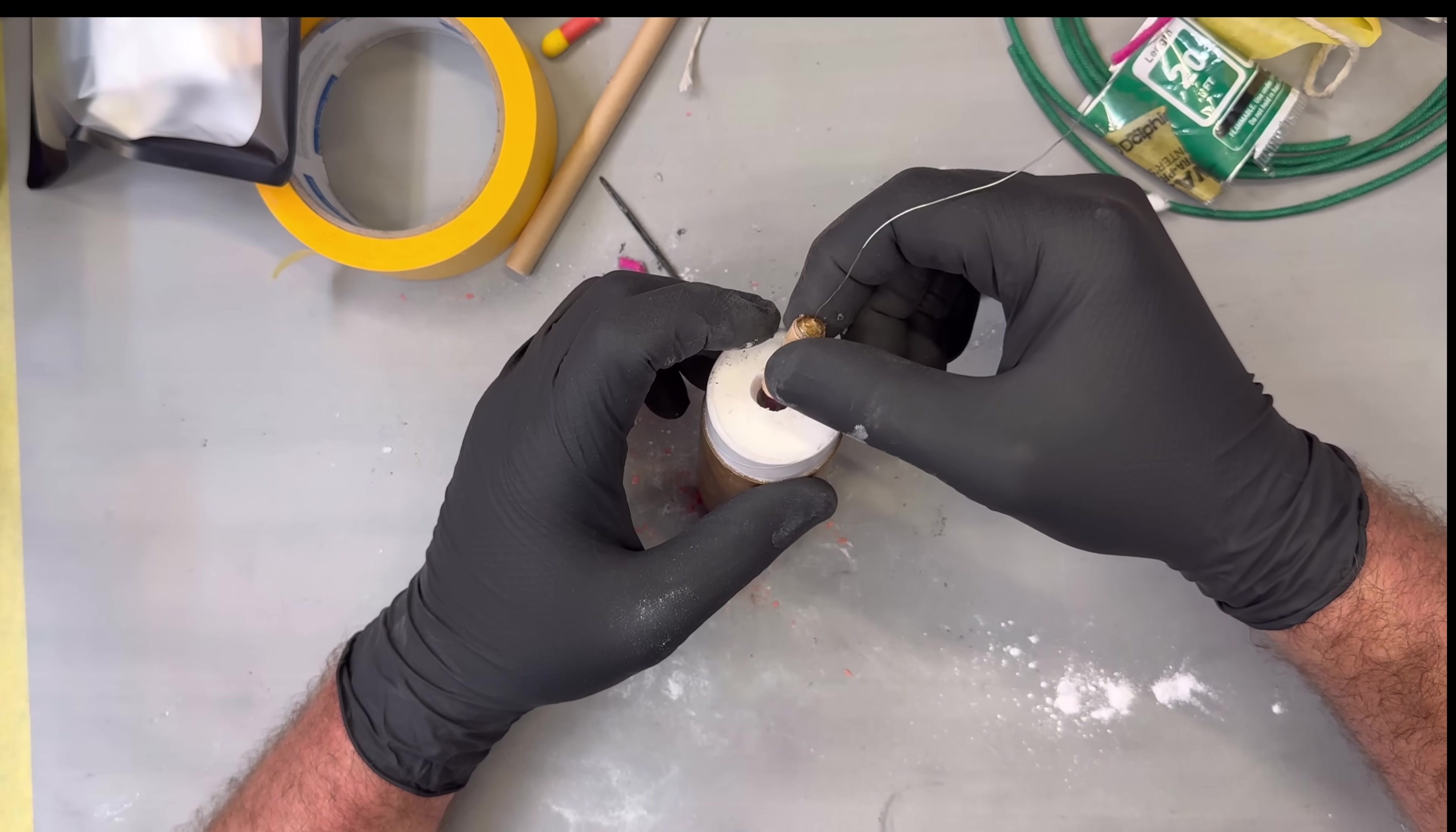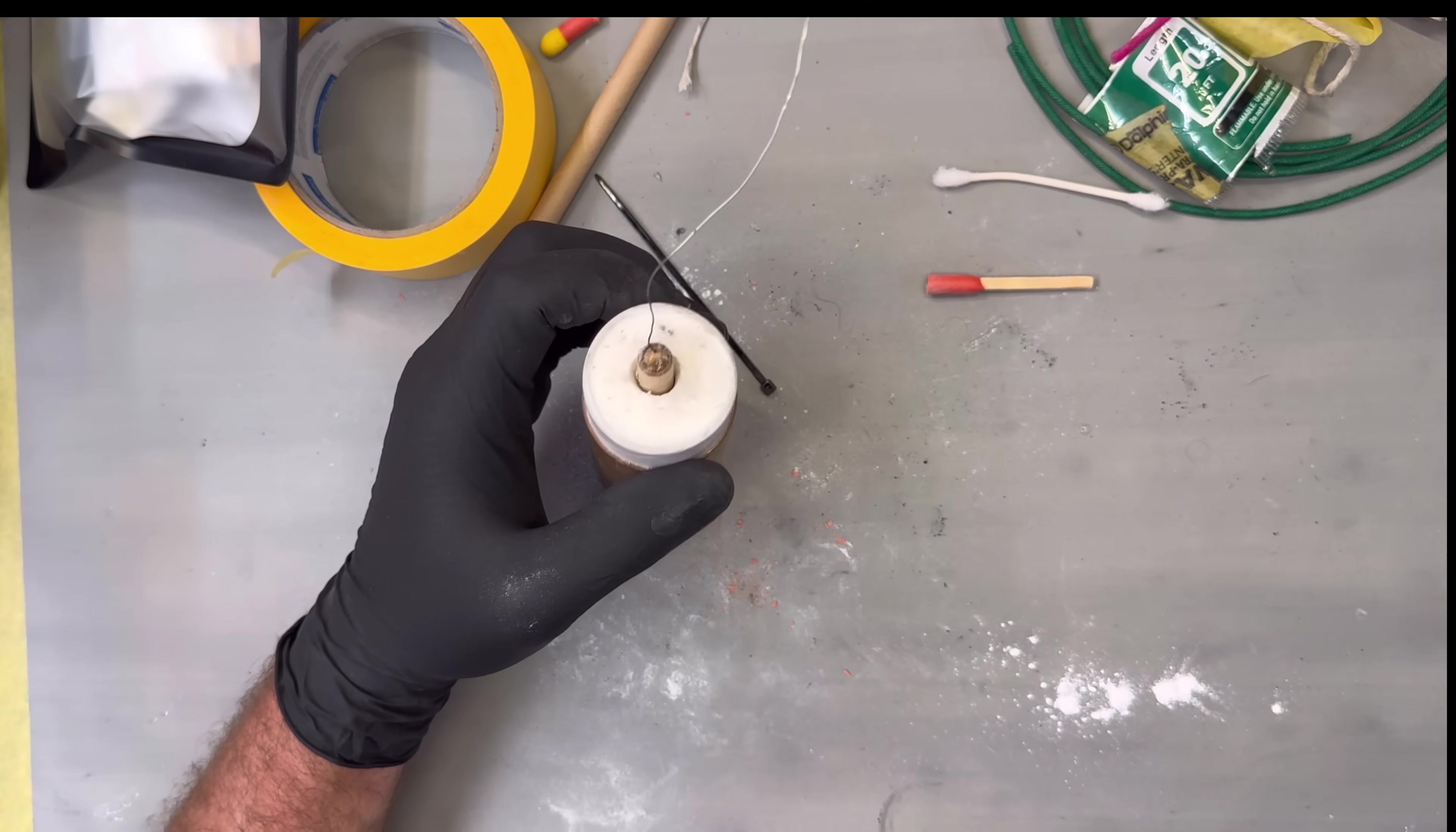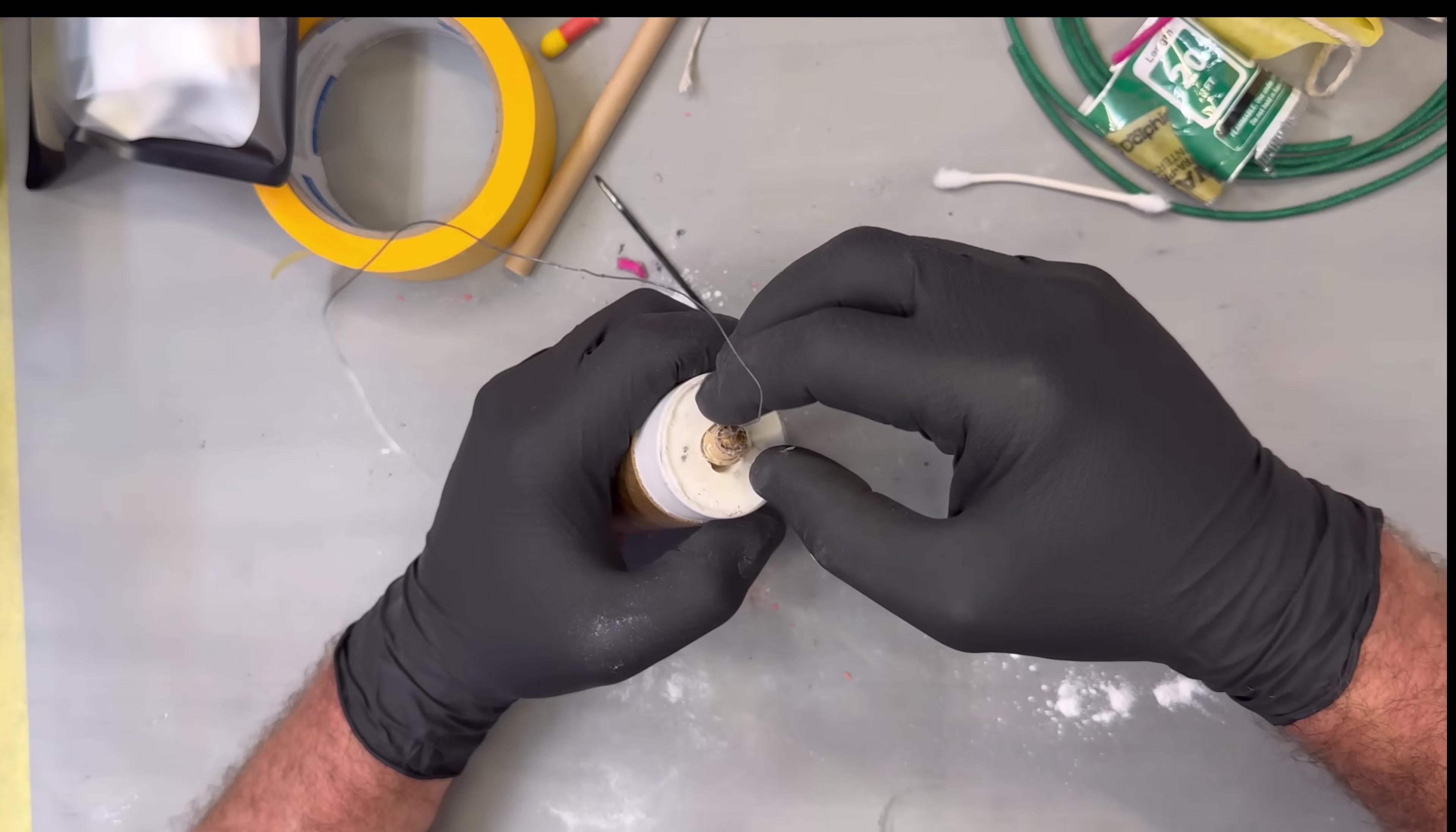All we do is we put this over the fuse, push it down to flush. Actually, before we push it flush, we can glue around this thing.